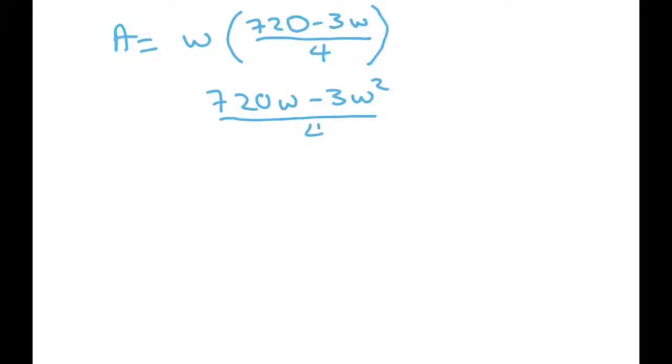So basically what we're going to get is area equals width times length, and we're going to substitute our length. It's 720 minus 3W over 4. Now when you simplify this, you get 720W minus 3W squared over 4, divided by 4.